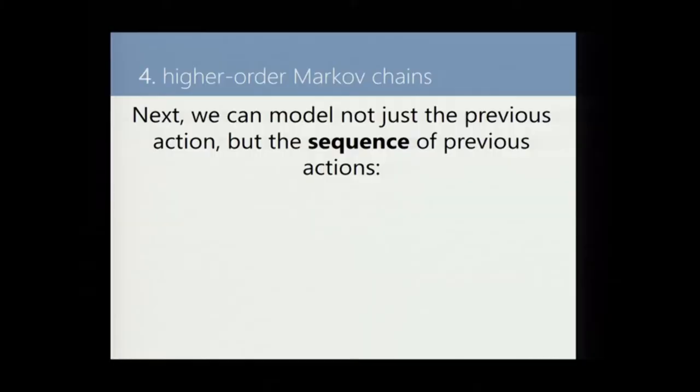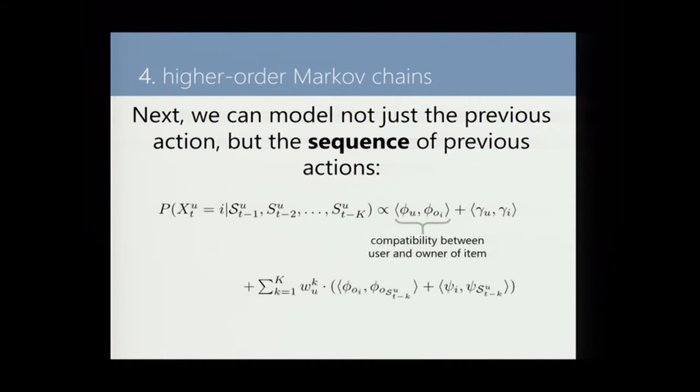So that's now user-user compatibility, and we can do the same sort of trick by adding memory to this. The item should be compatible with the previous item, and maybe the owner should also be compatible with the previous owner. And we can extend this further by adding more memory to this Markov chain. Nothing too complicated here, although I'm adding a lot of notation. All we're saying is that rather than looking at the previous action, we can look at the sequence of k previous actions and say the item should be consistent with the previous k items, the owner should be consistent with the previous k owners, and we can learn this kind of user-specific decay function which says how quickly does a particular user forget about the past.